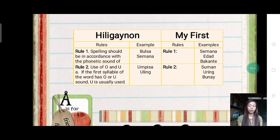Since it is in the first syllable the sound of o and u, we will use the letter u. Like the example here, the uling and bunay.